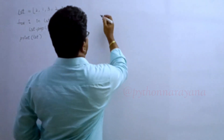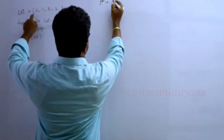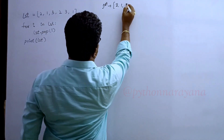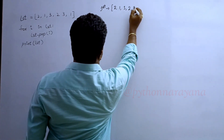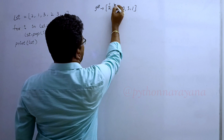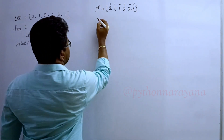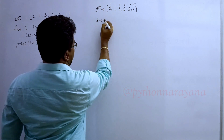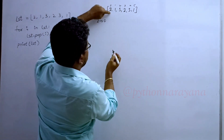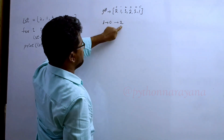Now I will take the first iteration. In the first iteration, what is the list here? The list contains 2, 1, 3, 2, 3, 1. Index numbers are 0, 1, 2, 3, 4, 5. First time, i-value is always 0. At index 0, what is there? 2. So i-value is 2.